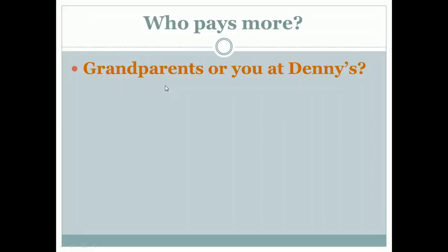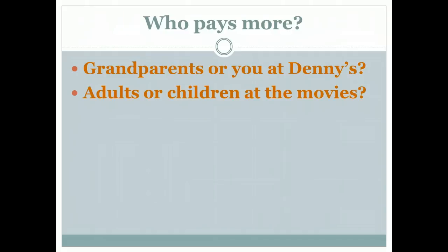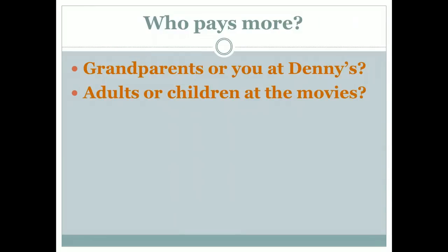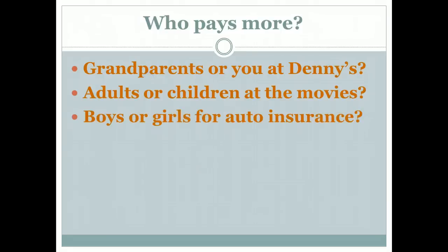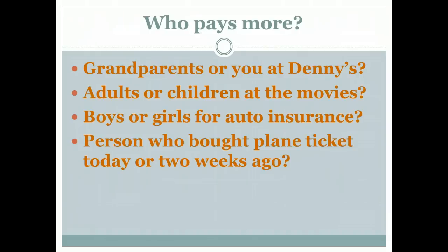Who pays more — your grandparents or you at Denny's? Typically it's your grandparents; they get some sort of senior citizen discount. Who pays more at the movies — adults or children? Typically children will pay less than adults because kids usually get either a reduced fee or there's a student price that's less than the normal price. Who has to pay more for auto insurance — boys or girls? Typically it's boys because historically they have a higher rate of accidents. And typically with airlines, the person who bought the plane ticket today pays more than the person who bought it two weeks ago. So anytime a business decides to charge one group a different price than another group for the same product, we have what's called price discrimination.